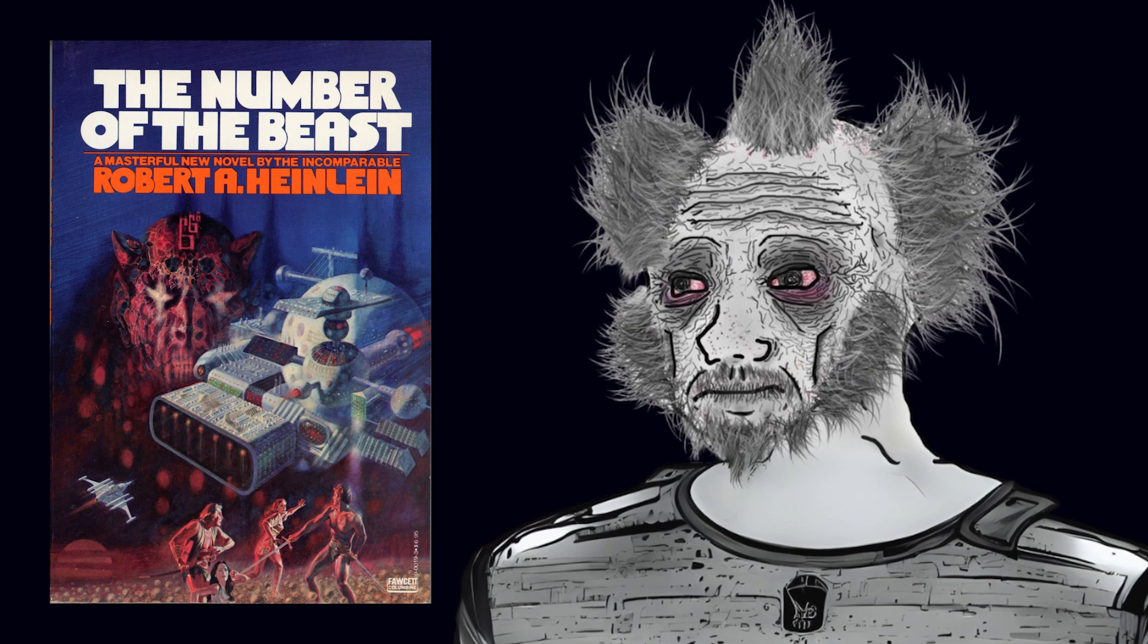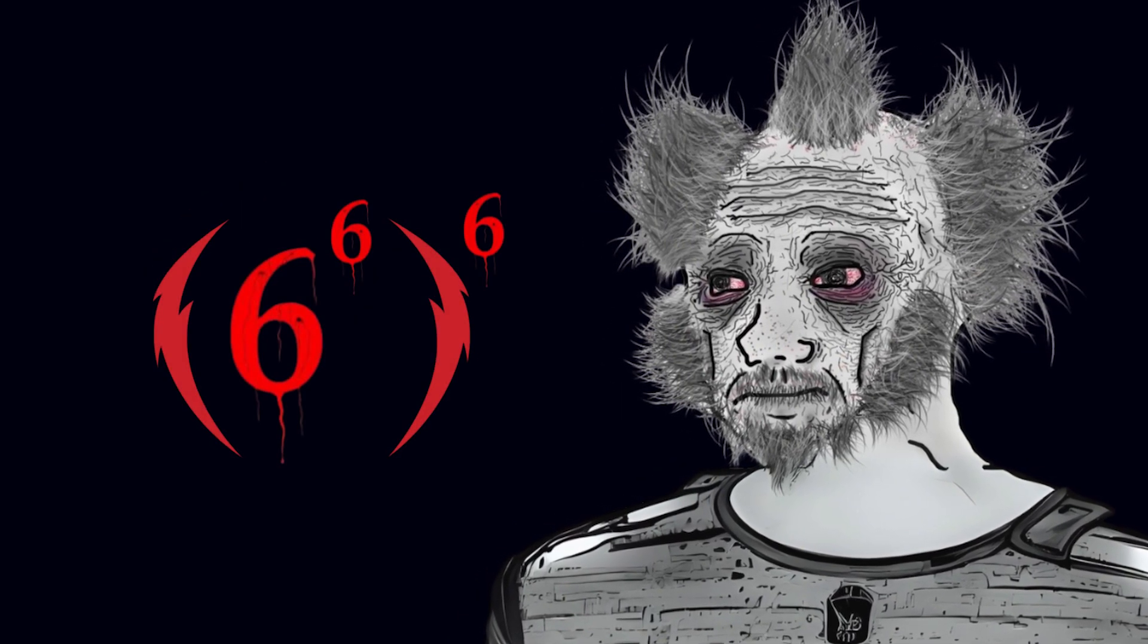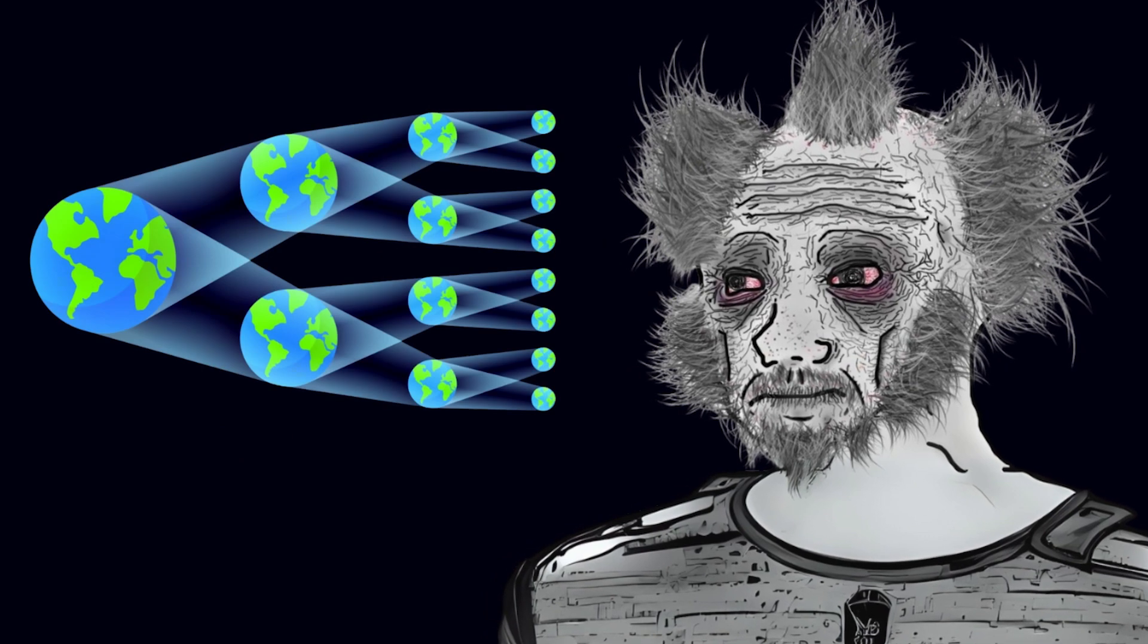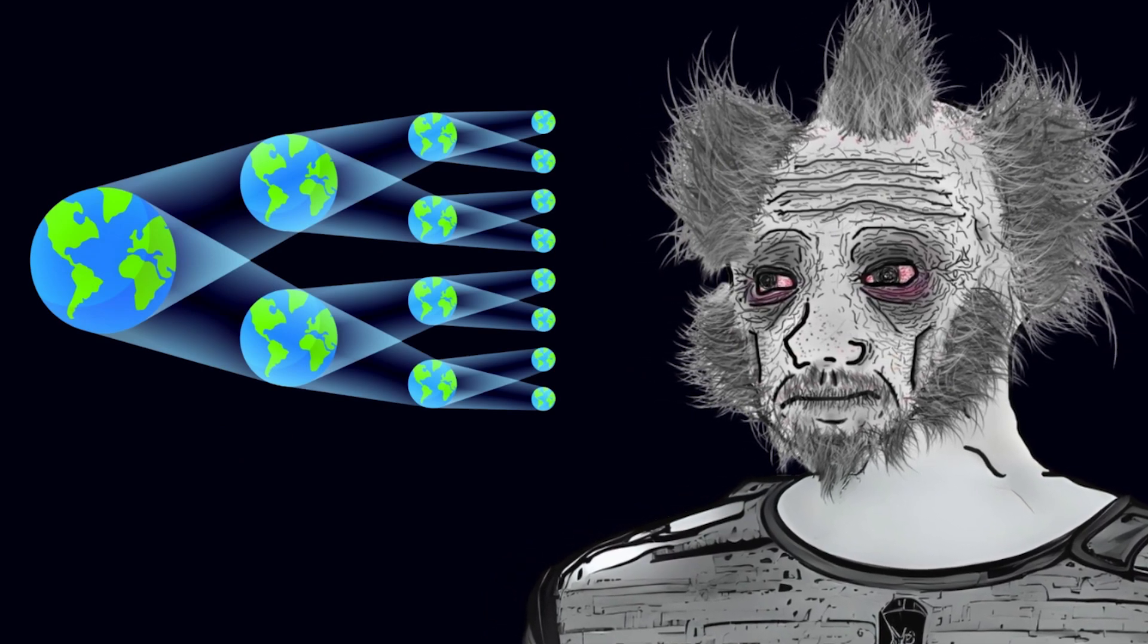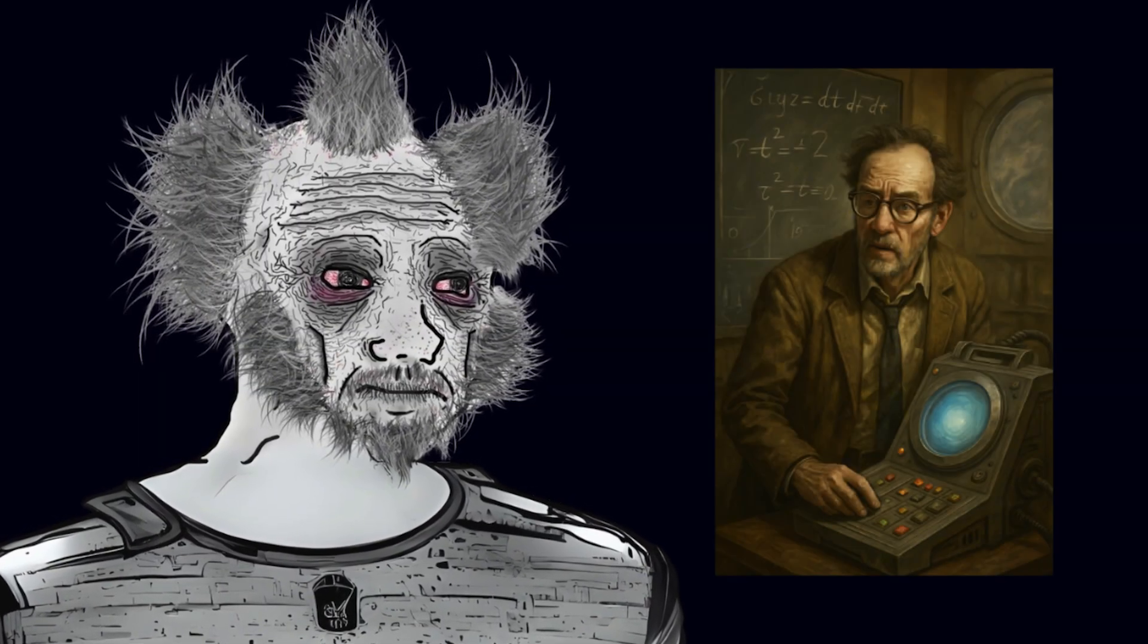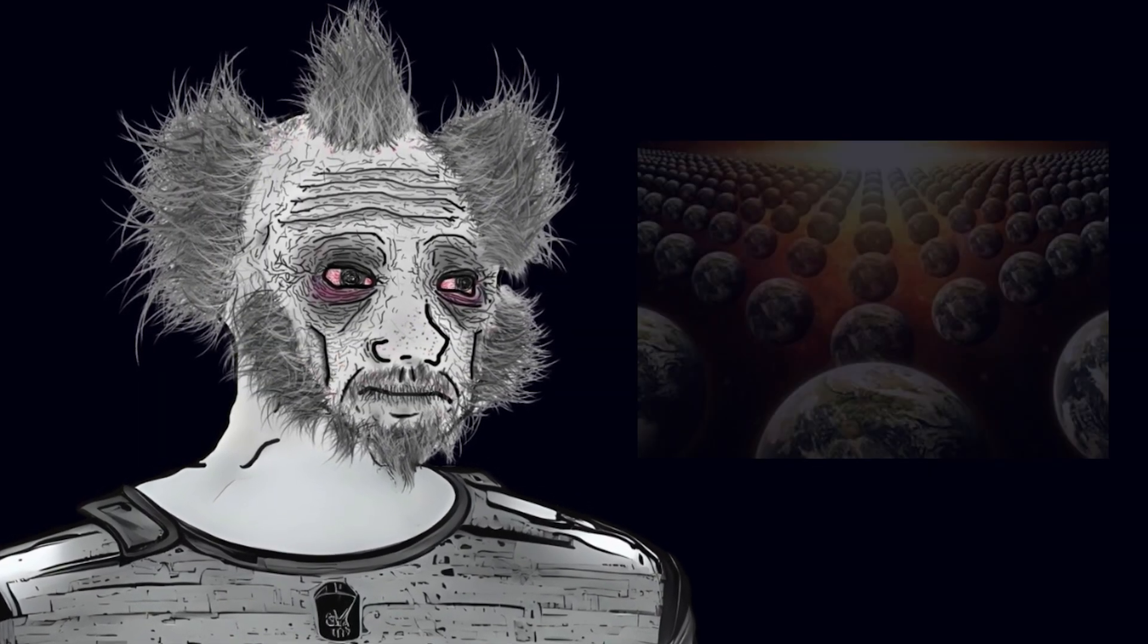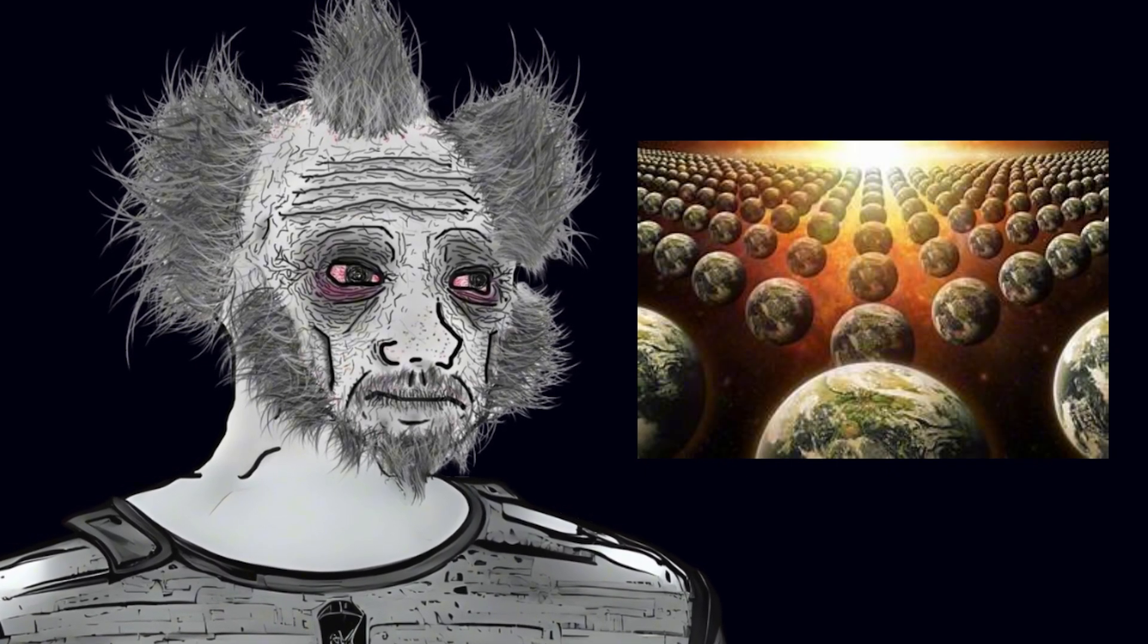It represents the initial number of parallel universes accessible through the Continua device. It is later theorized by the character Jacob that the number may be merely the instantly accessible universes from a given location and that there's a larger structure that implies an infinite number of universes.